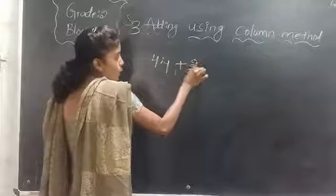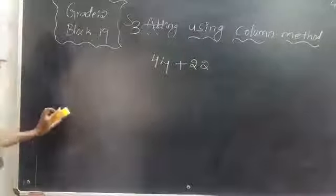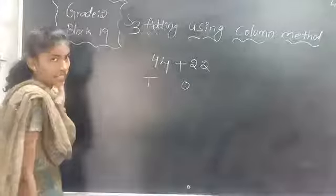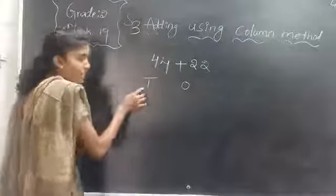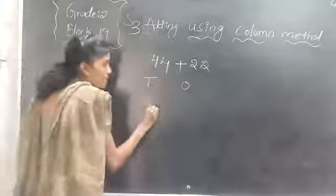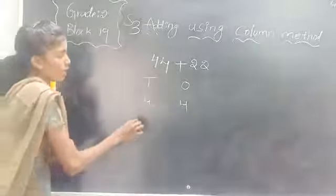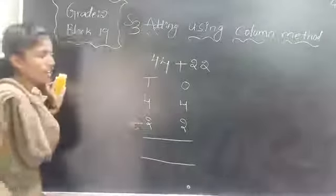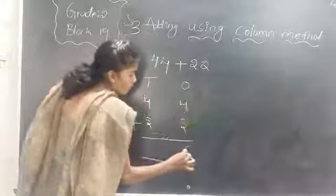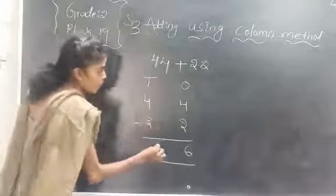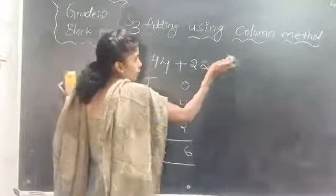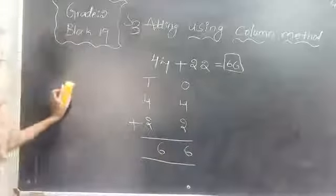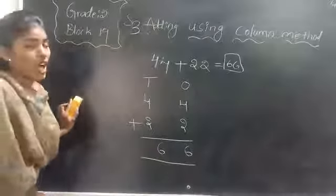Let me take one more example: 44 plus 22. I am adding 44 and 22. So what do I have to do? Write the 1s column and the 10s column. 4 ones and 4 tens in 44, and 2 tens and 2 ones in 22. Add the 1s place first: 4 plus 2 is 6. Then add the 10s: 4 plus 2 is 6. So what is 44 plus 22 children? 66. The answer we get after adding is called the sum or total.